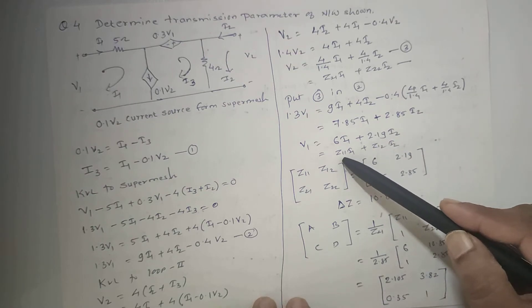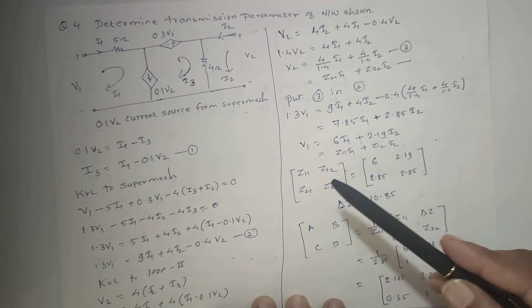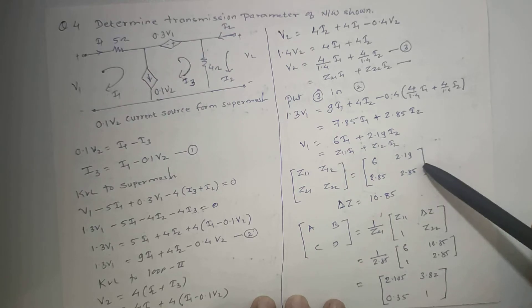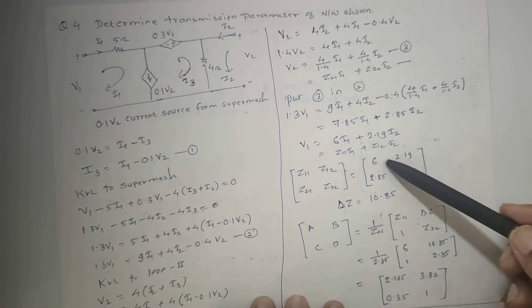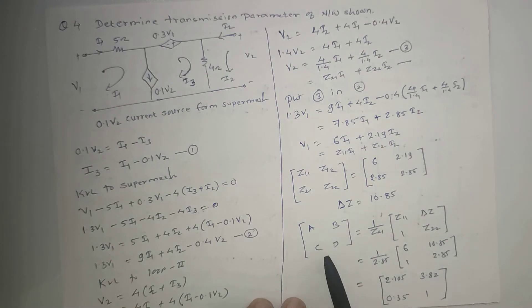This is nothing but Z11·I1 plus Z12·I2. So this is our Z parameter. If you find the determinant of this matrix, it comes out to be 10.85. Then A, B, C, D parameters...